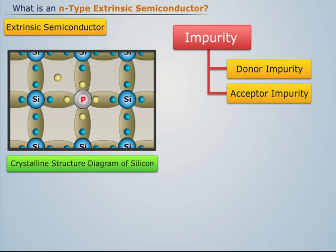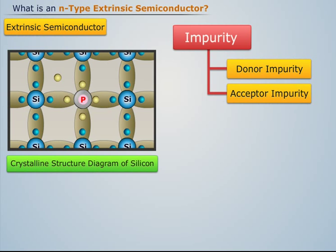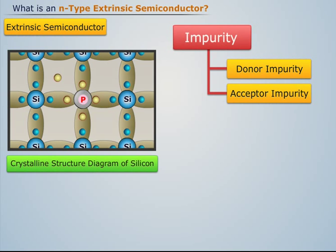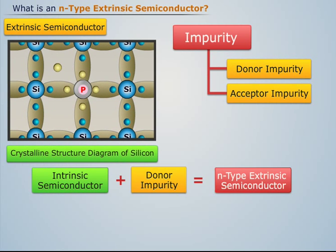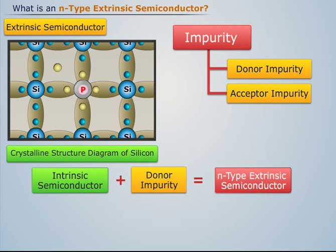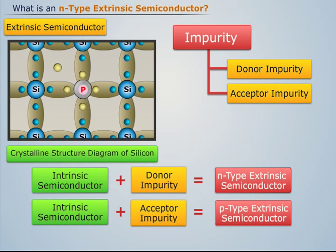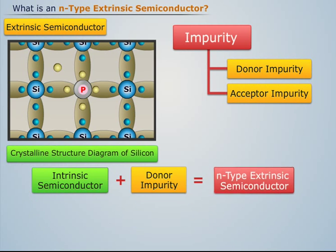Extrinsic semiconductor is basically a doped semiconductor. On the basis of the type of impurity added, extrinsic semiconductor is classified as N-type semiconductor and P-type semiconductor. Here we will discuss N-type semiconductor.